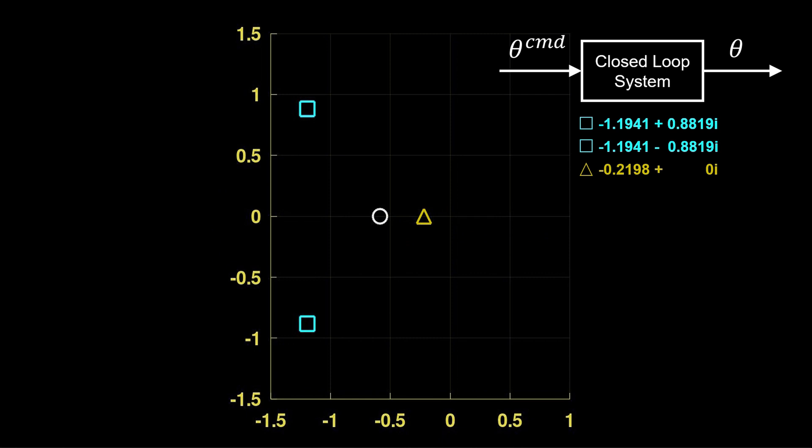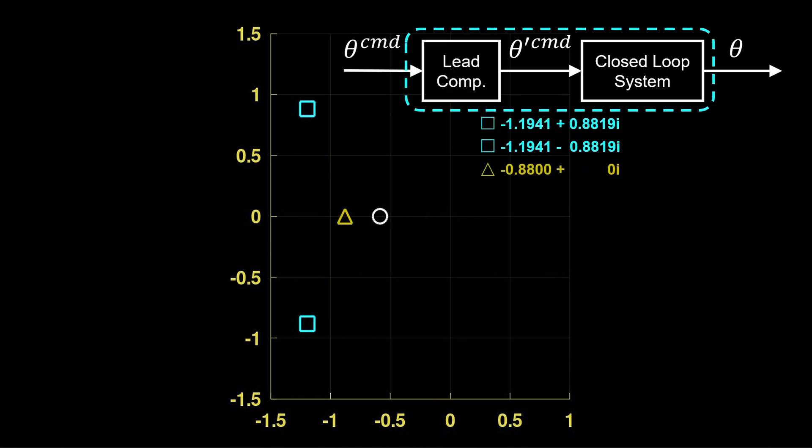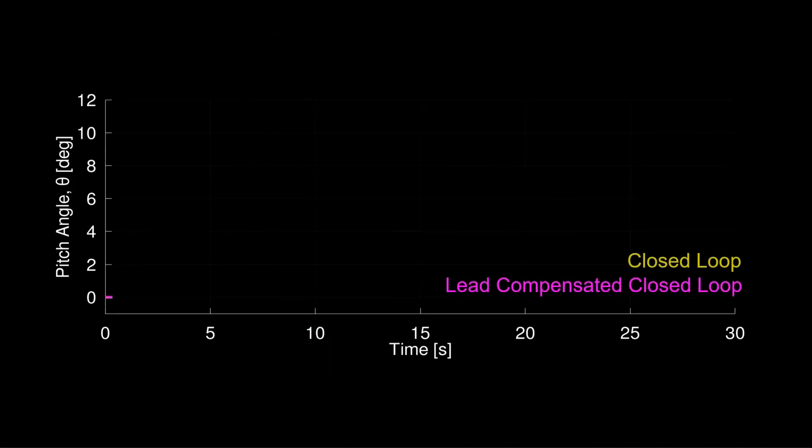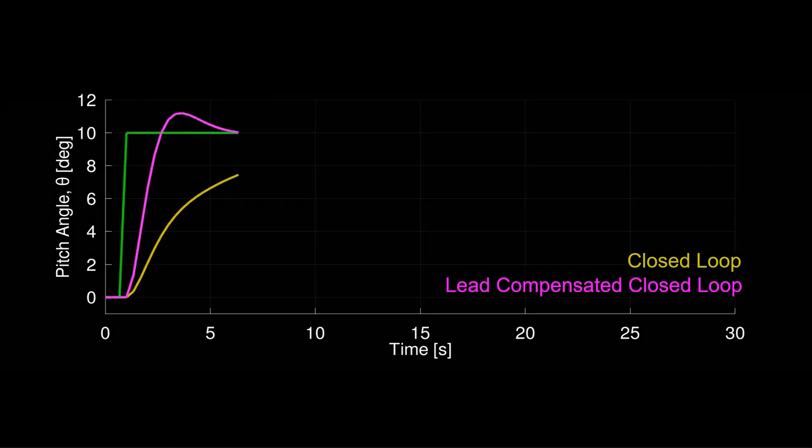To get around the open loop zero, we introduce a lead compensator. Now, the zero no longer limits the pitch angle rise time, and the lead compensated closed loop response is much faster.